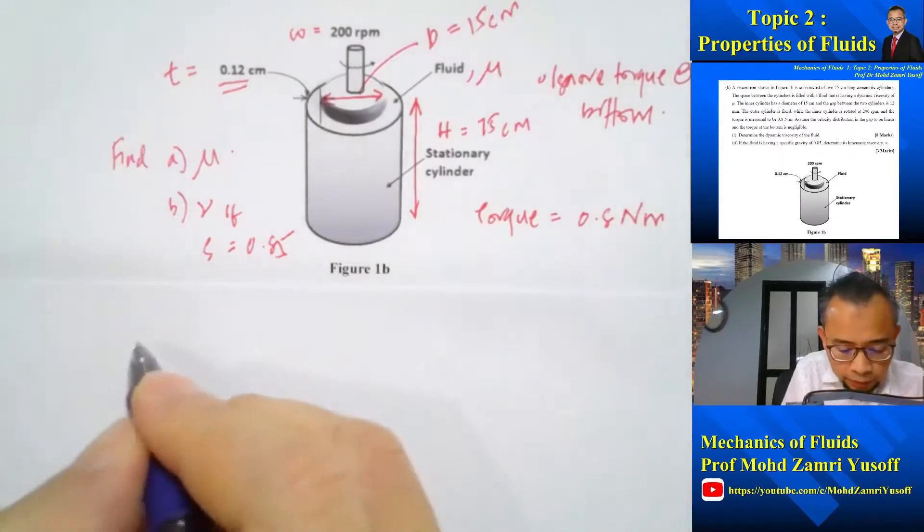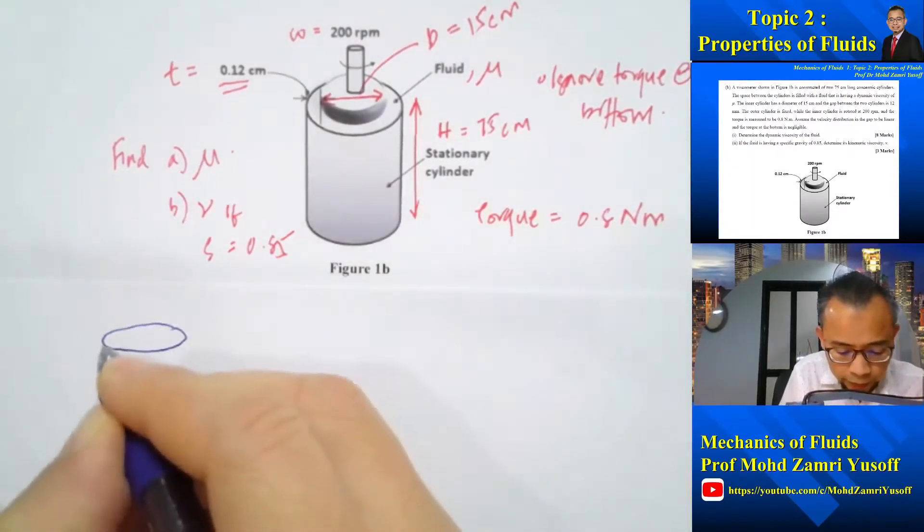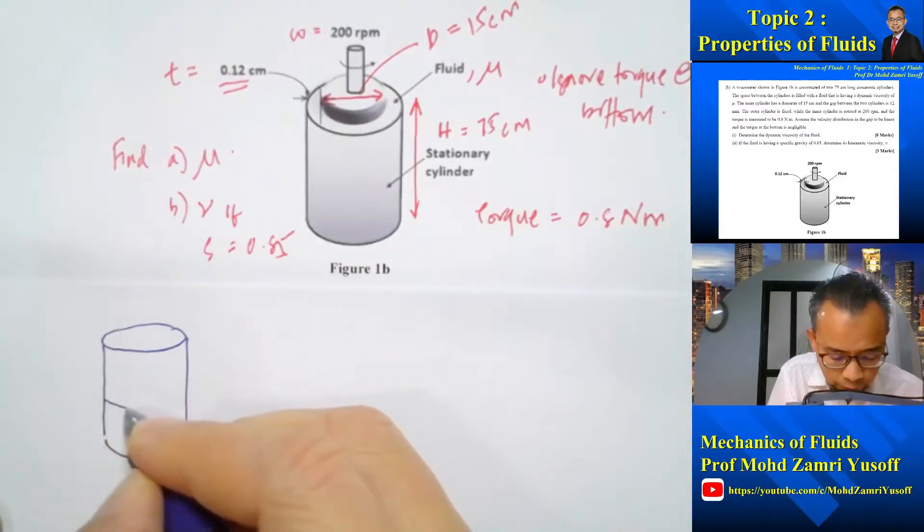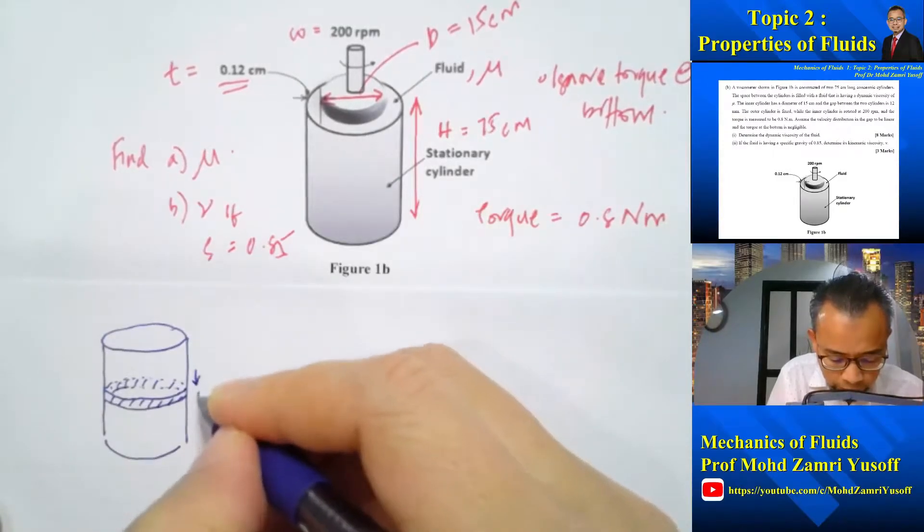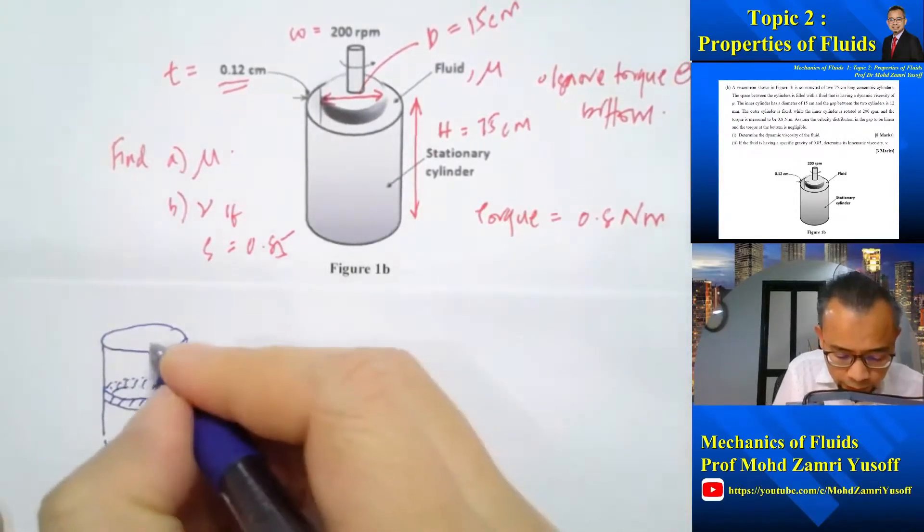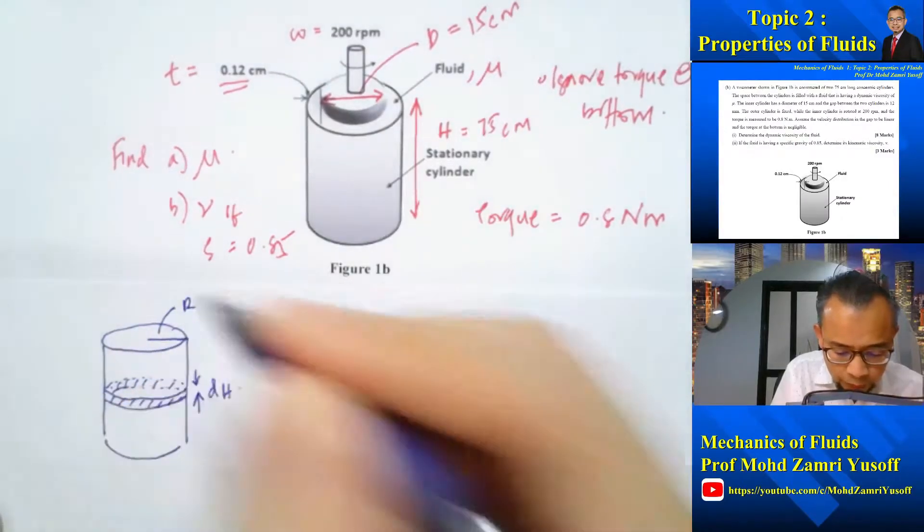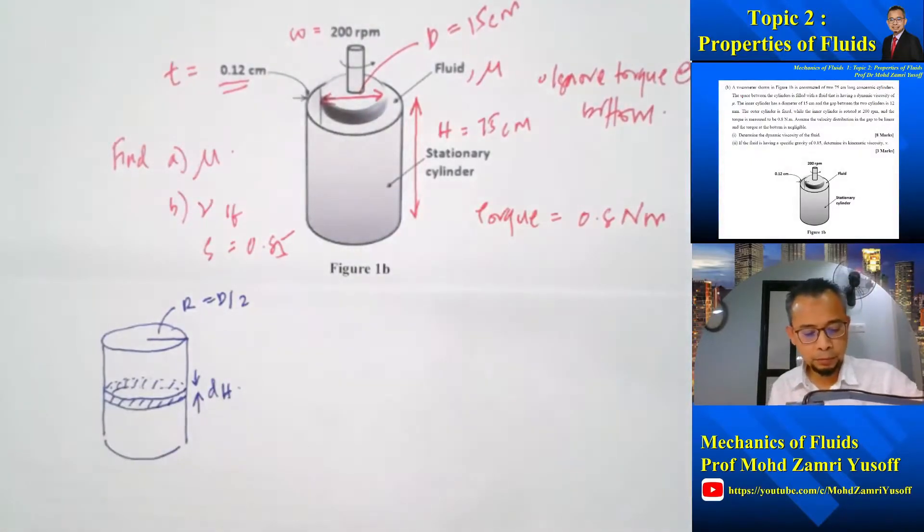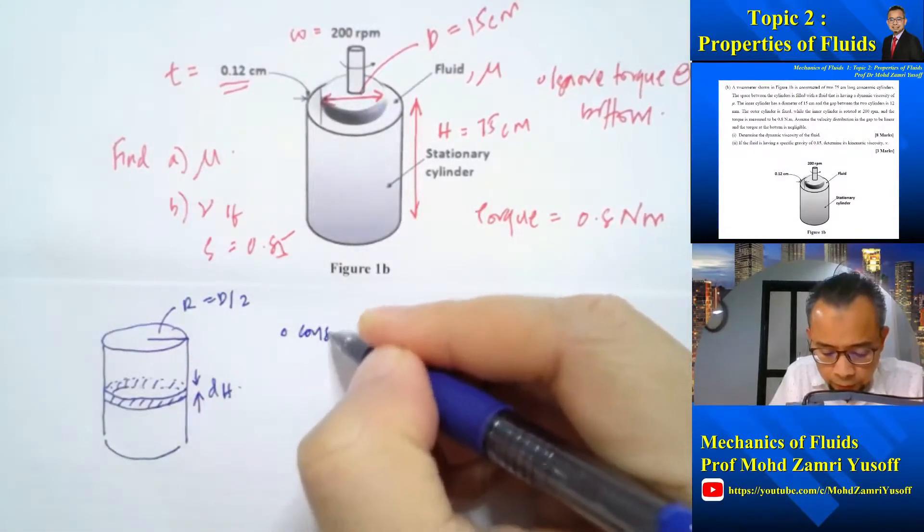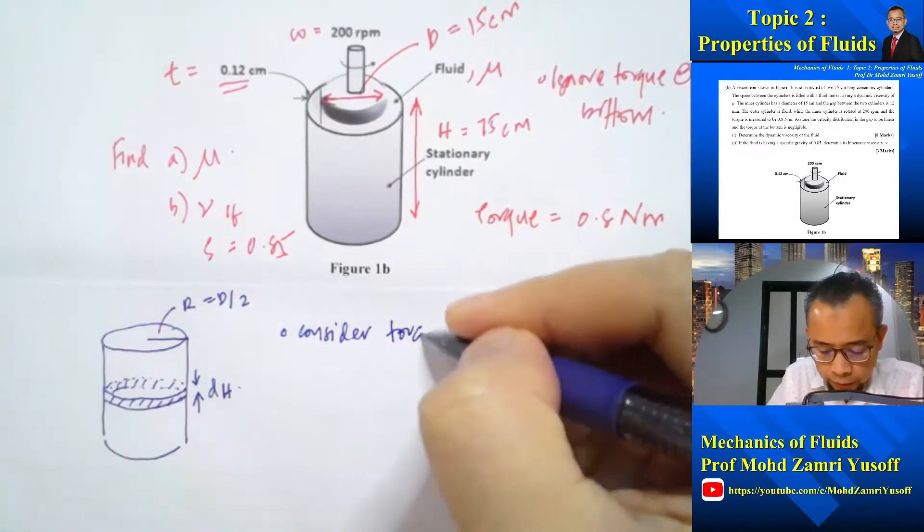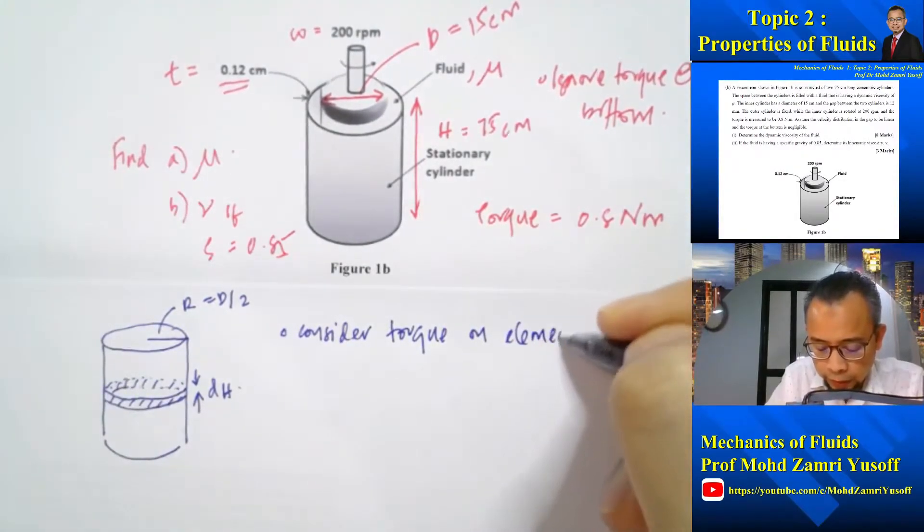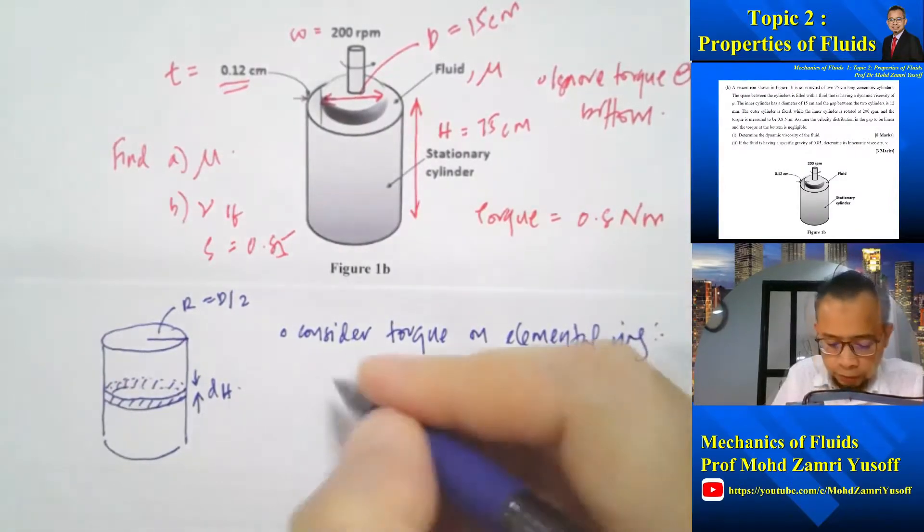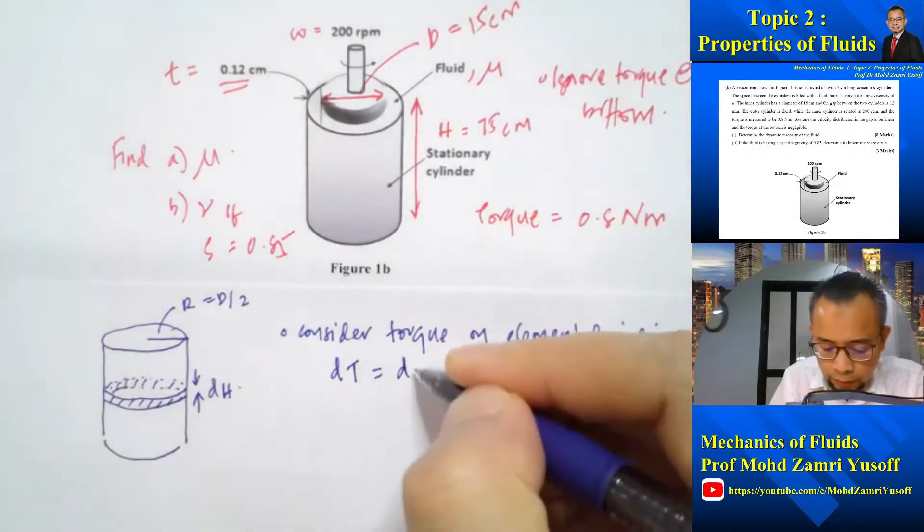So now let's consider the cylinder and I will consider a small elemental element whereby that distance is equal to dh and that is equal to r which is actually equal to d over 2. So consider torque on elemental ring. So d-torque is equal to df multiplied by r.